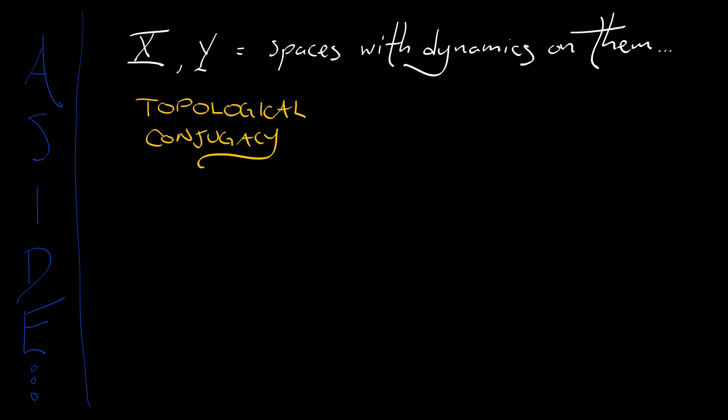Let's say that X and Y are topological spaces with dynamics on them. They can both be continuous time, they can both be discrete time. It doesn't matter. A topological conjugacy is a homeomorphism between these spaces, a continuous bijection with continuous inverse, such that it preserves orbits. It takes orbits to orbits.